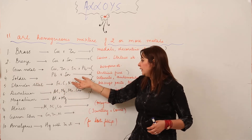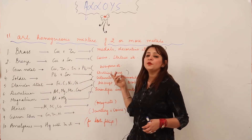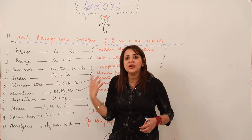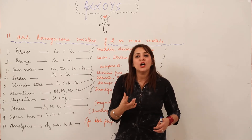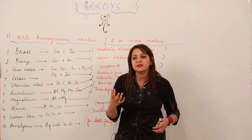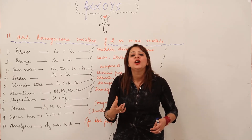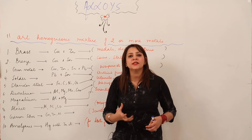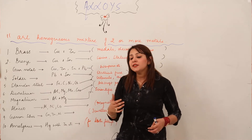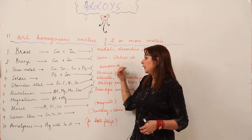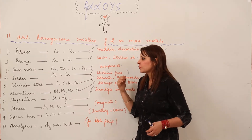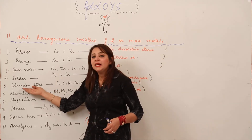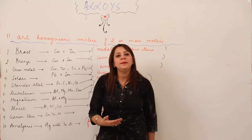Next is solder, which is an alloy of lead and tin. It is used for making electrical fuses which we use in houses to prevent fire, avoid short circuiting, and prevent overloading.